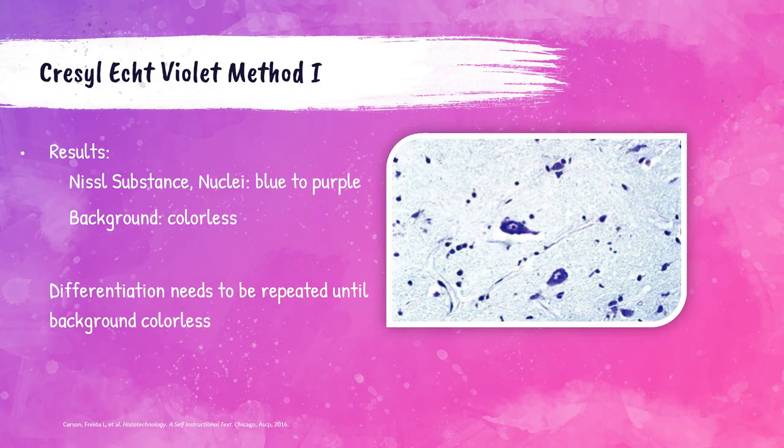Differentiate in absolute alcohol — two changes at 10–30 seconds each — then through several changes of xylene. Check sections microscopically and repeat differentiation until the background is colorless. Mount with synthetic resin. When stained with Cresyl Echt Violet Method 1, both Nissl substance and nuclei will be blue to purple in color and the background will be colorless.